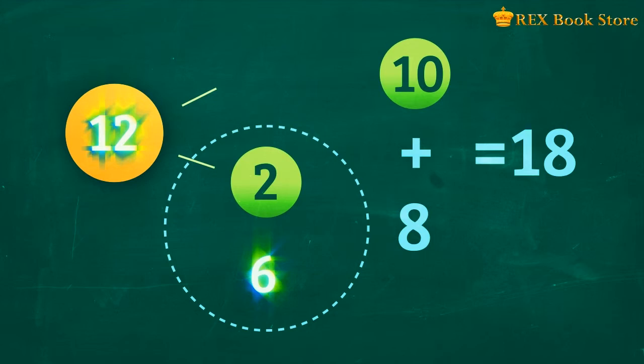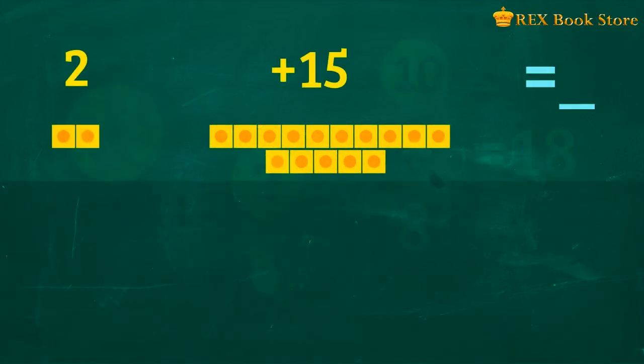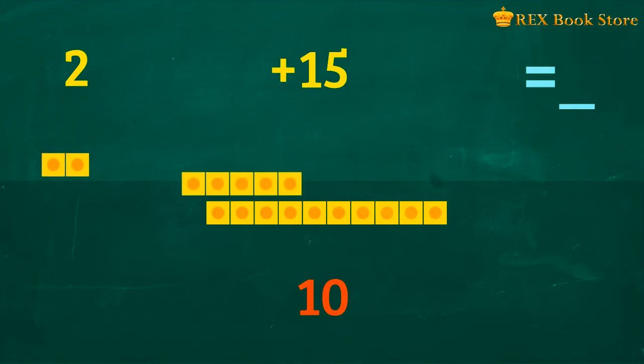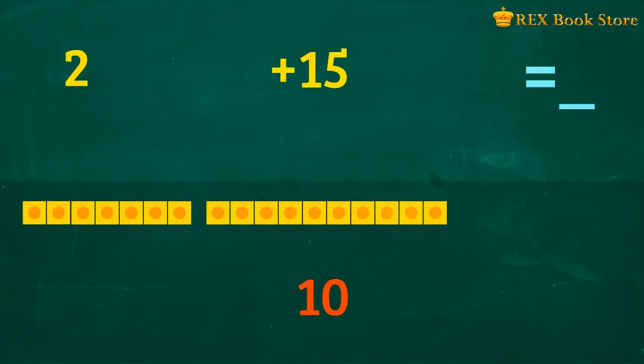Let's try another example. 2 plus 15 is equal to how many? Remember, we need to regroup the bigger number to make 10. How many units are left? There are 7 units. So 2 plus 15 is equal to 17.